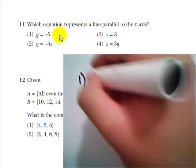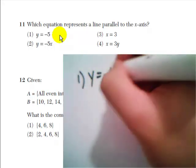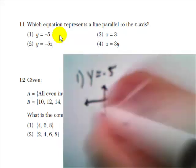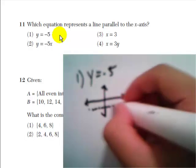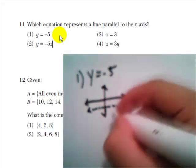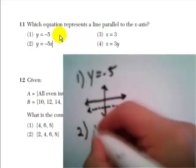If you graphed out number 1, for example, y equals negative 5, you will see that it's just a horizontal line below the x-axis. Number 2,